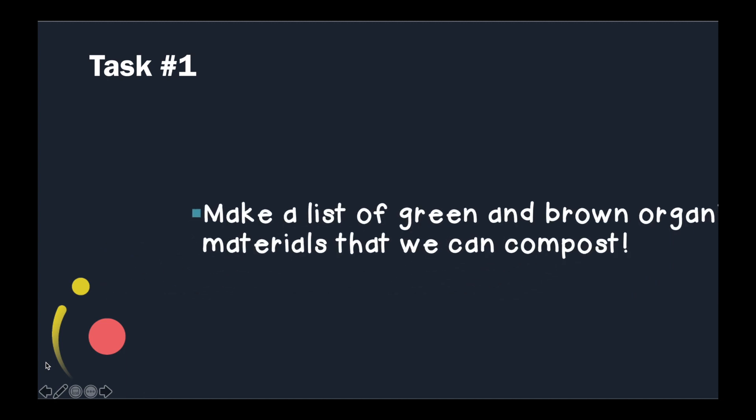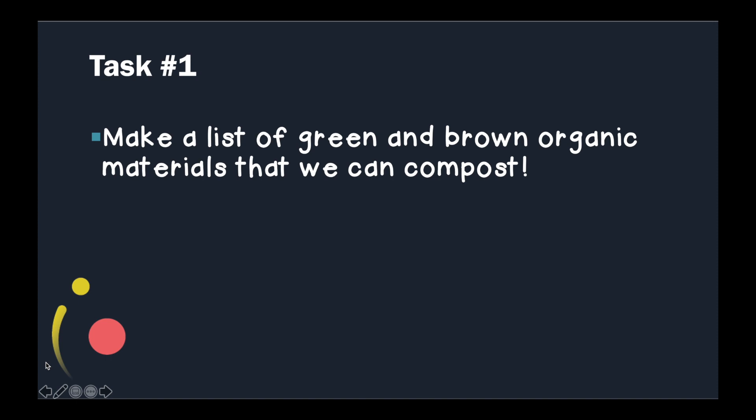So, here's your first task. Make a list of green and brown organic materials that we can compost. At this point, if you're not quite sure what, you can go back to the previous slide. Or, you can go back to the movie and watch it again so that you can start writing down those green and brown organic materials that we can compost. Now, I want you to stop the video and write those down so that when we continue on, you'll be ready with us. We're going to add it to our plan to reduce trash in our home.